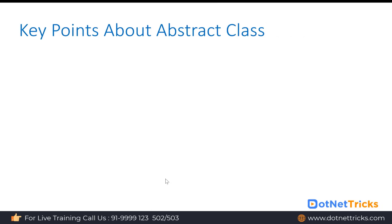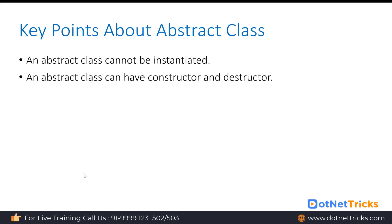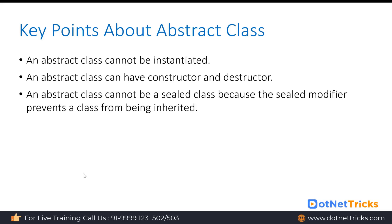Key points about the abstract class: First, abstract class cannot be instantiated — you cannot create an abstract class object. Even so, an abstract class can have a constructor as well as a destructor just like a normal class. Abstract class cannot be a sealed class because a sealed class cannot be inherited, and the abstract class must be inheritable.